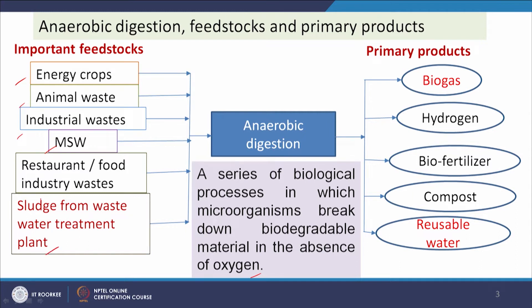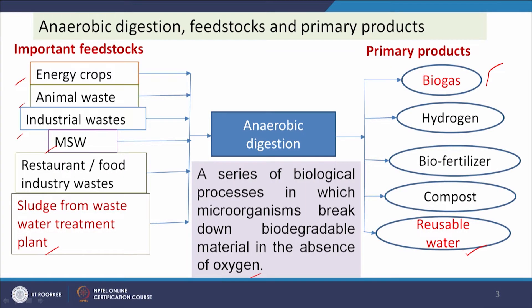Restaurant and food industry waste and sludge from wastewater treatment plants are also feedstocks for anaerobic digestion. After these reactions, the key products are biogas for energy recovery, reusable water with improved BOD/COD quality, and solid sludge usable as bio-fertilizer or for composting. Additionally, hydrogen can be produced alongside biogas — these are the main advantages of this process.